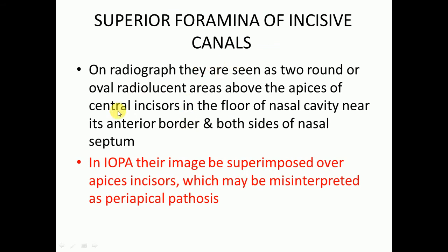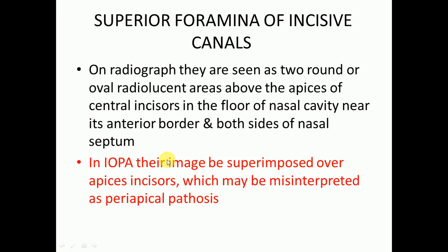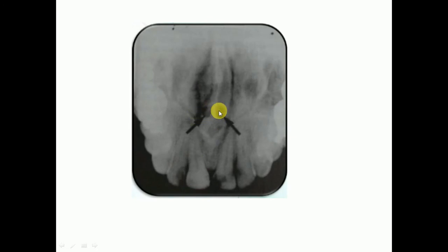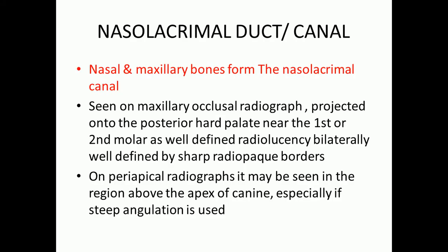Then we have the superior foramina of the incisive canals. On radiograph they are seen as two round or oval radiolucent areas above the apices of the central incisors, in the floor of the nasal cavity near its anterior border and on both sides of the nasal septum. On intraoral periapical images, they may be superimposed over the apices of the incisors, which can be misinterpreted as periapical pathosis. Remember, these are normal anatomical structures, not pathosis.